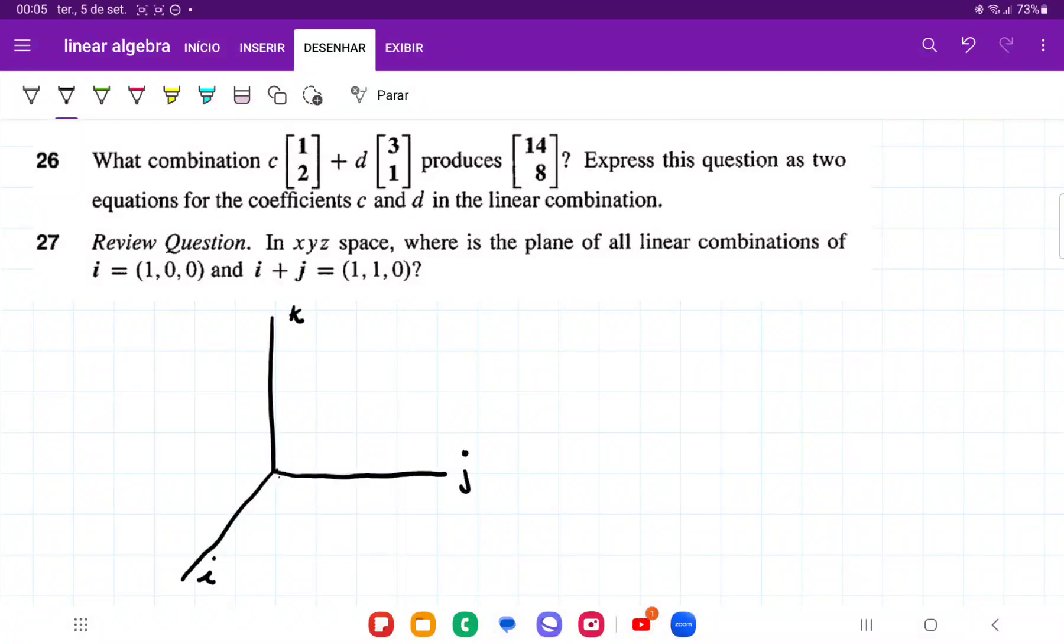So for number 27, we're given that in x, y, z space, where is the plane of all linear combinations of i and i plus j?